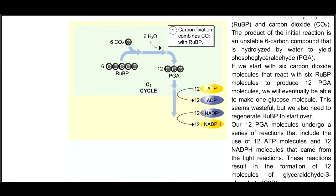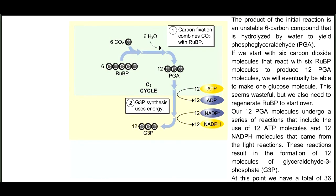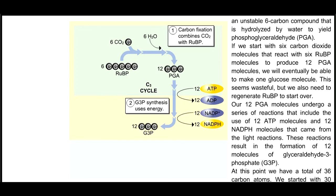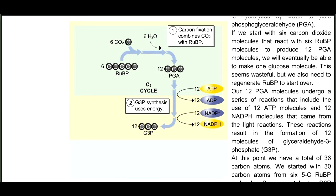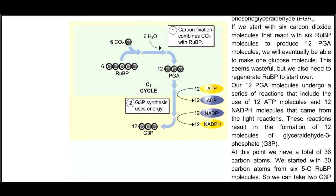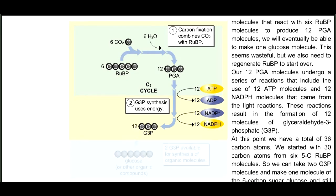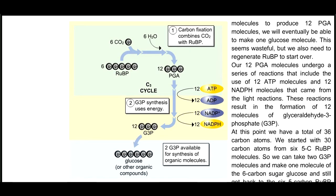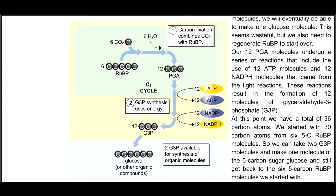These reactions result in the formation of 12 molecules of glyceraldehyde-3-phosphate, G3P. At this point, we have a total of 36 carbon atoms. We started with 30 carbon atoms from 6 5-carbon RuBP molecules. So we can take 2 G3P molecules and make one molecule of the 6-carbon sugar glucose and still get back to the 6 5-carbon RuBP molecules we started with.